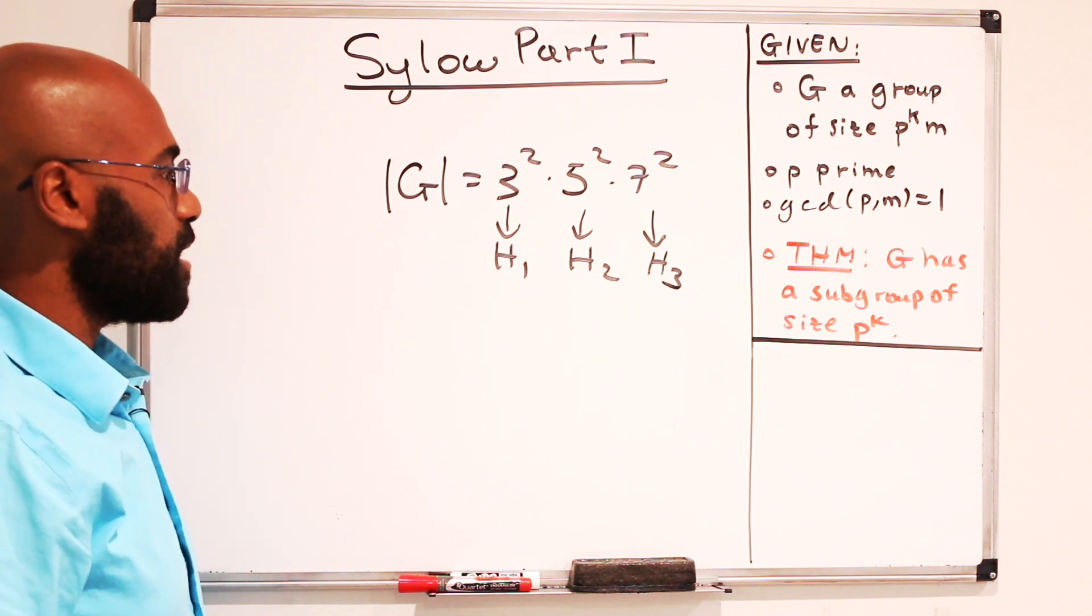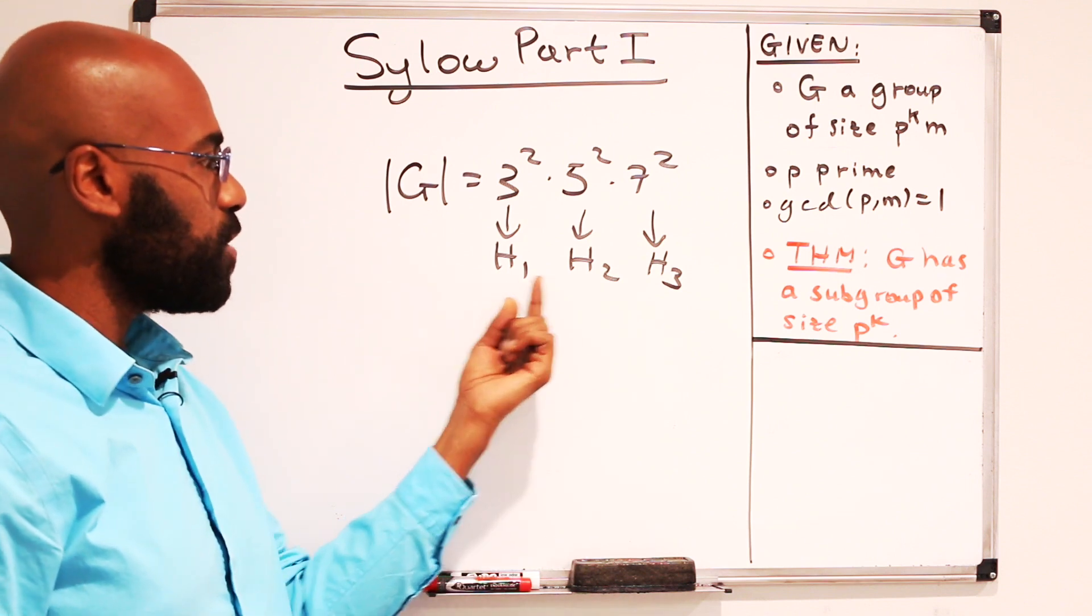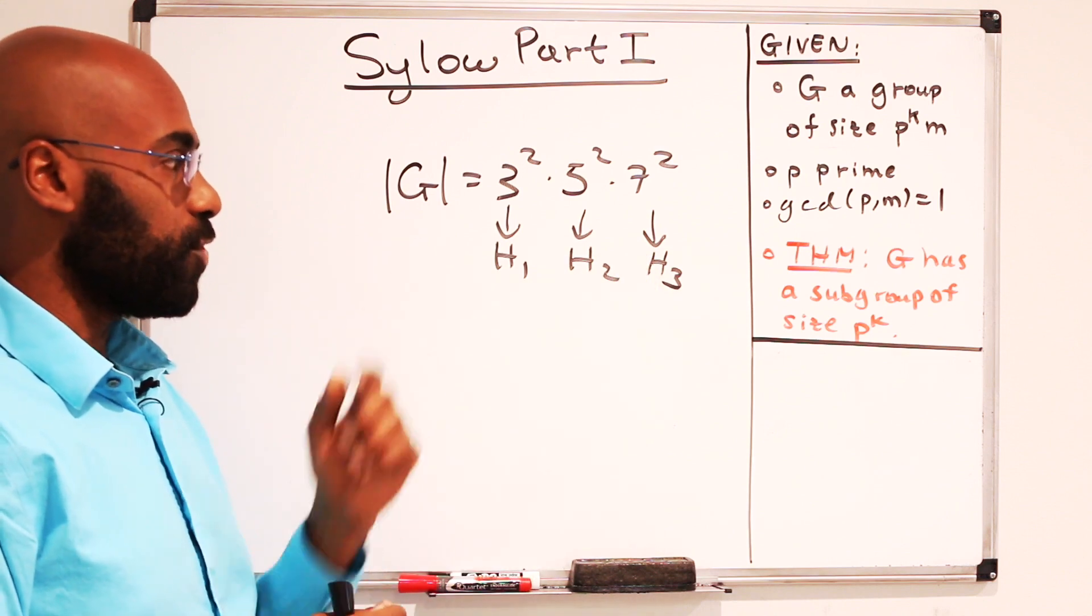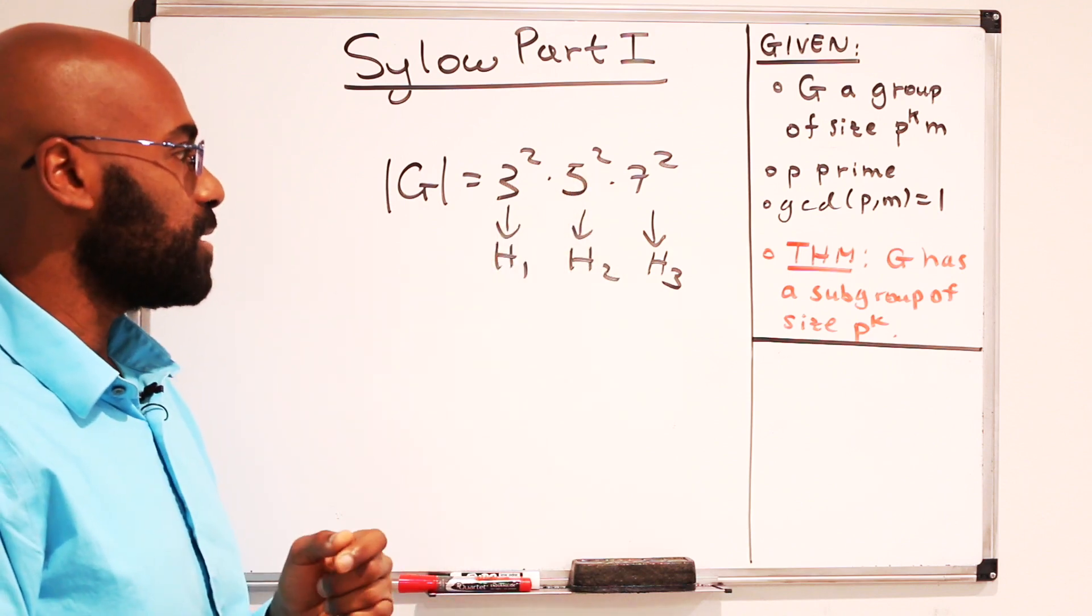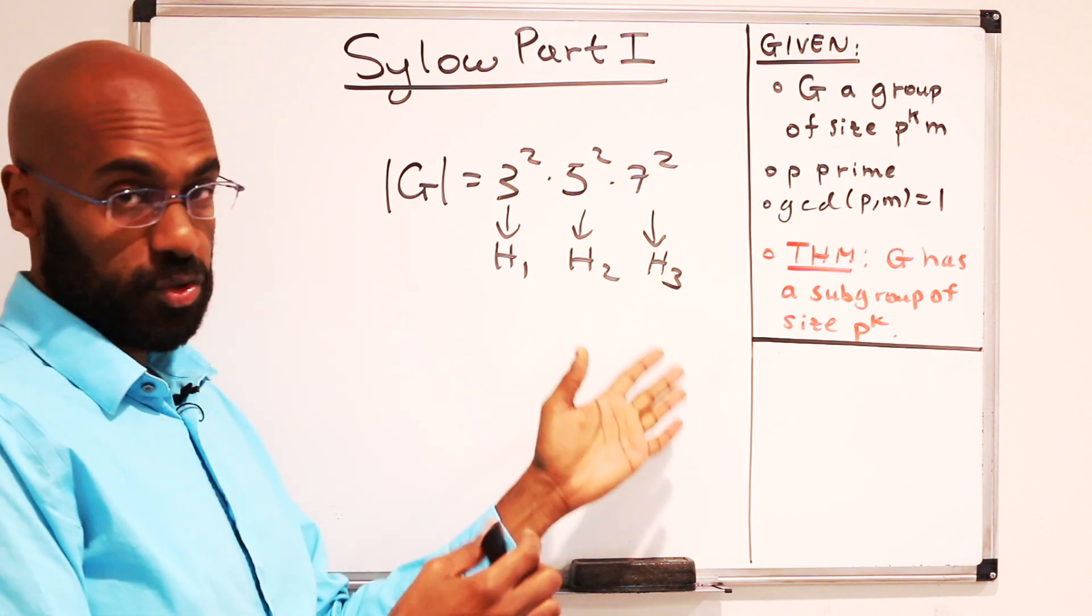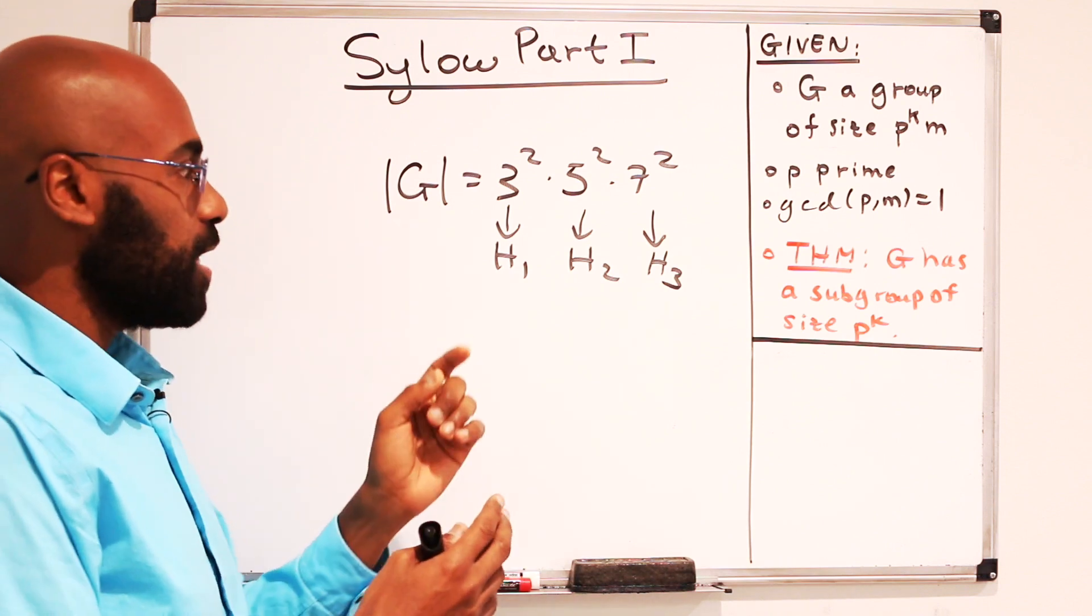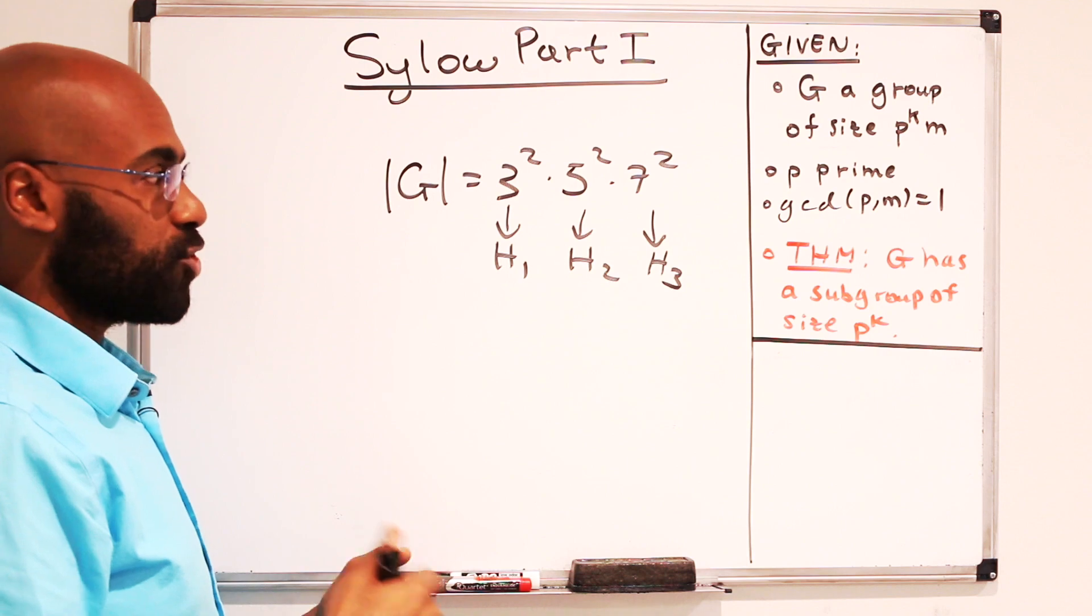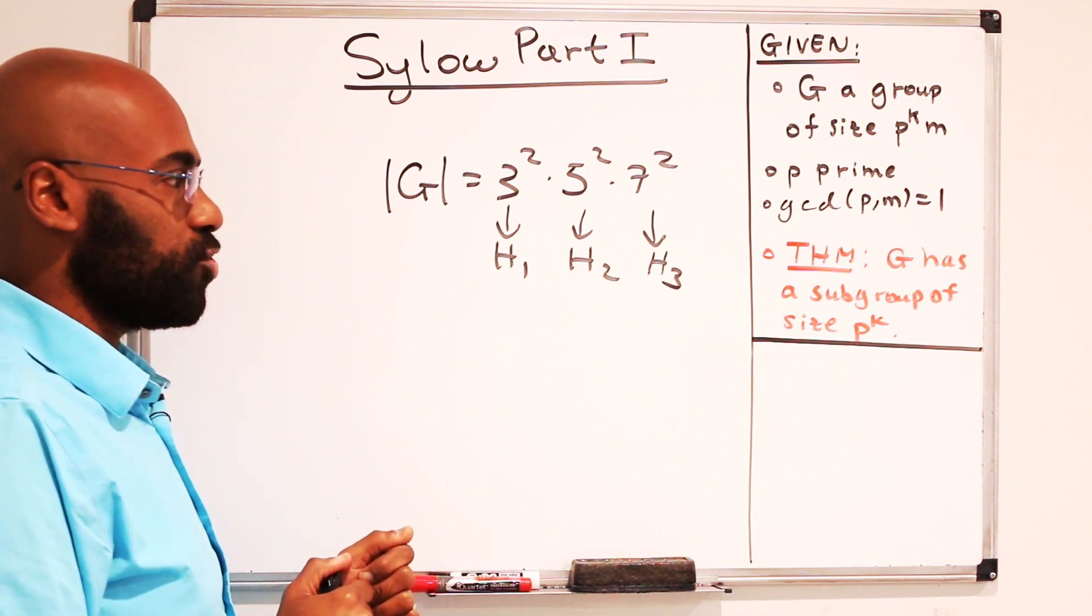So the idea behind the Sylow theorem is that if you want to figure out the structure of G, you now have at your disposal three subgroups of really large size that you know live inside of your group G. In this case, because they're prime squared size, there's a theorem that tells us that these three groups happen to be abelian. Now there may be many choices for these individual groups, but at least we know we can find them. And then the goal for finding out how G works is to figure out how these individual groups piece together.